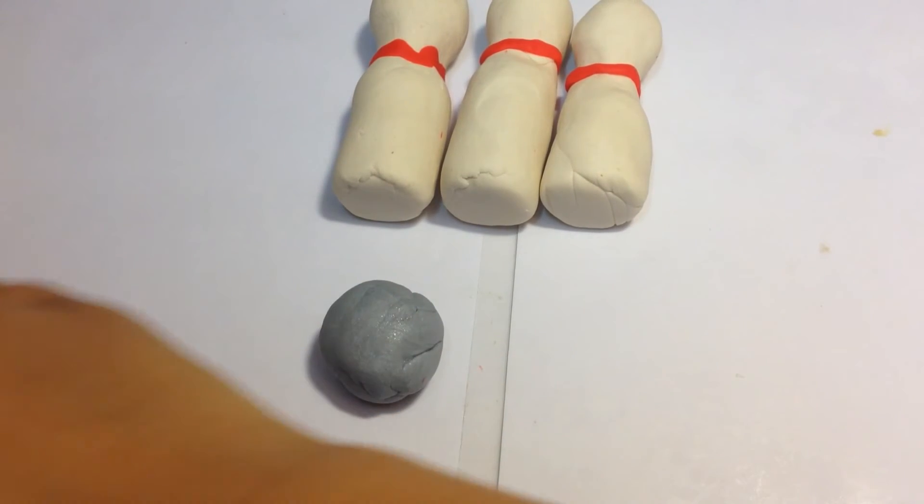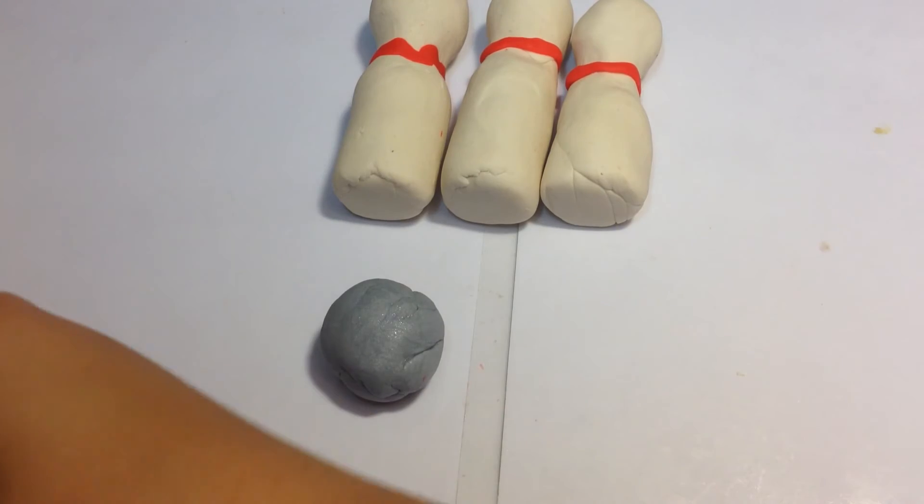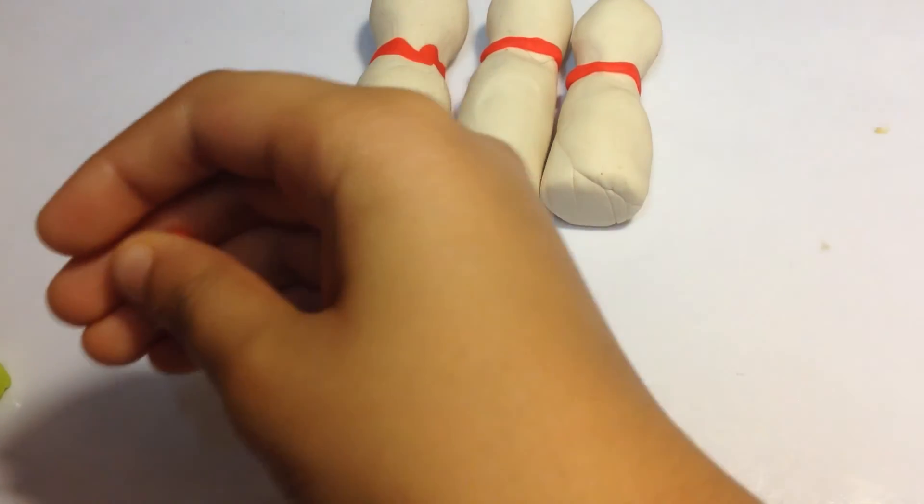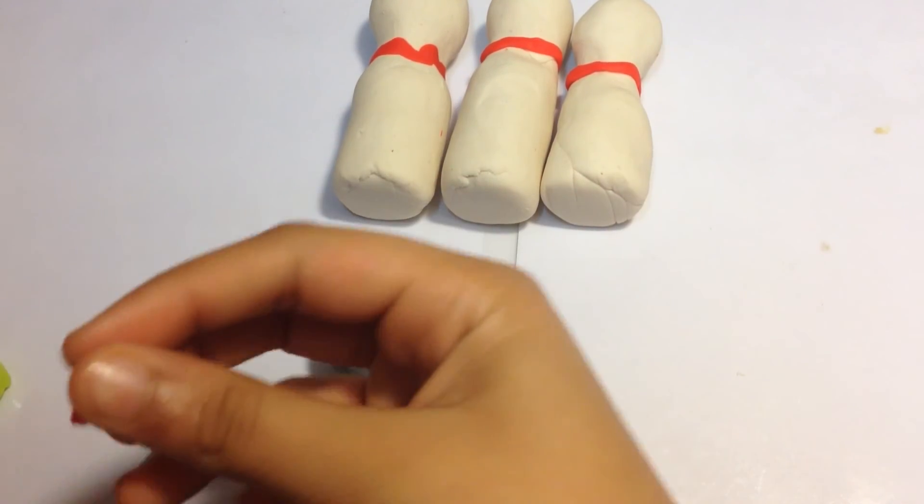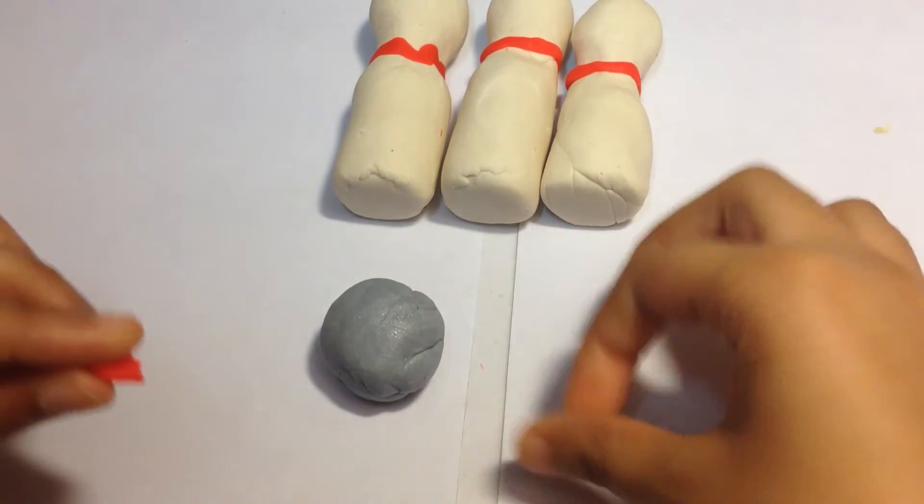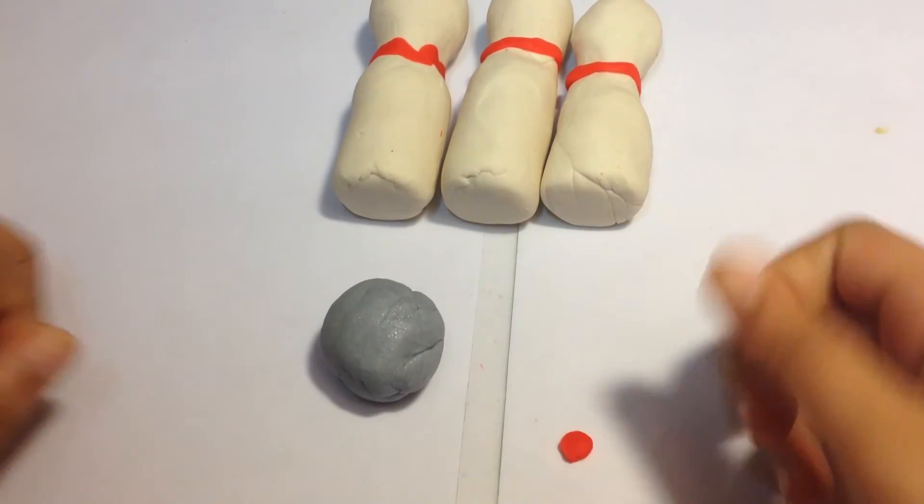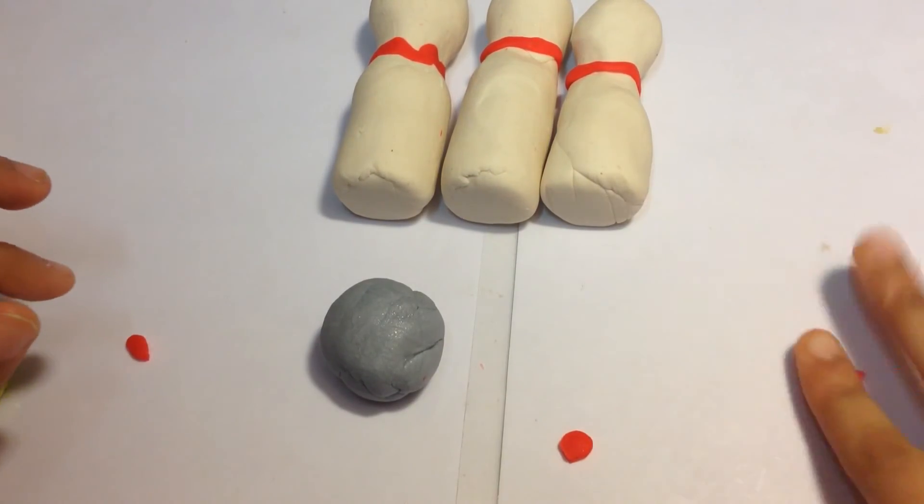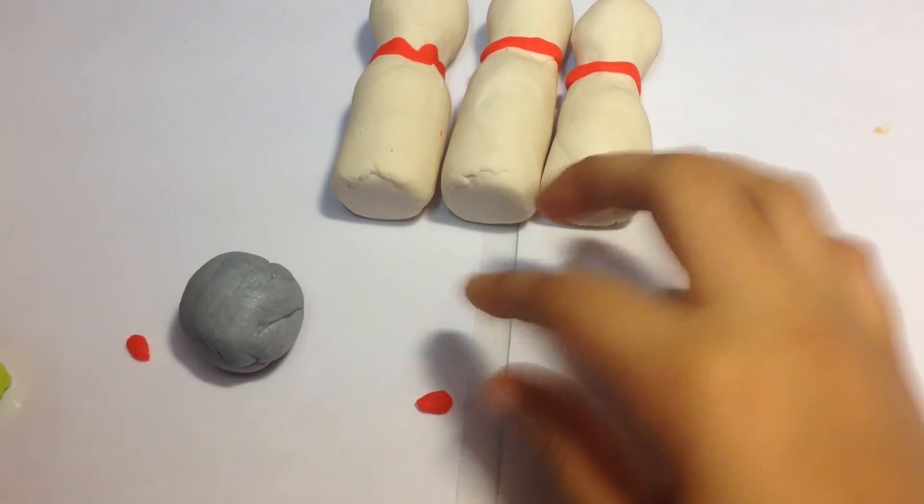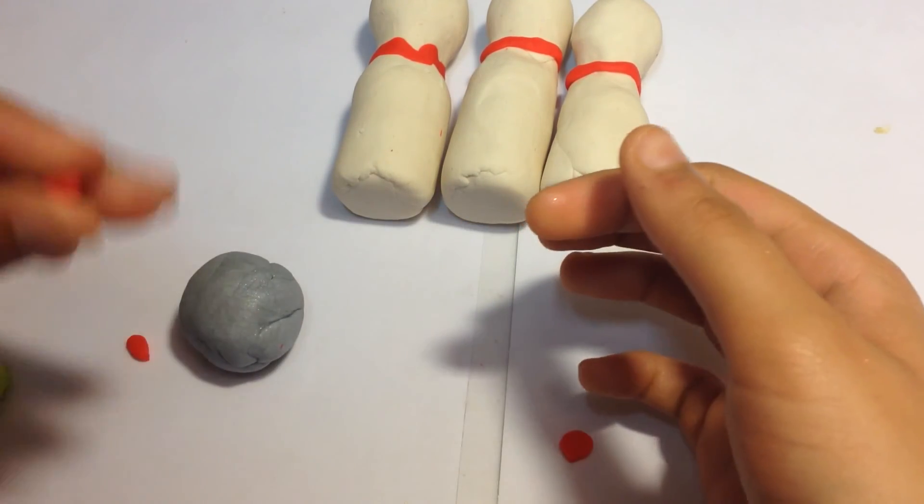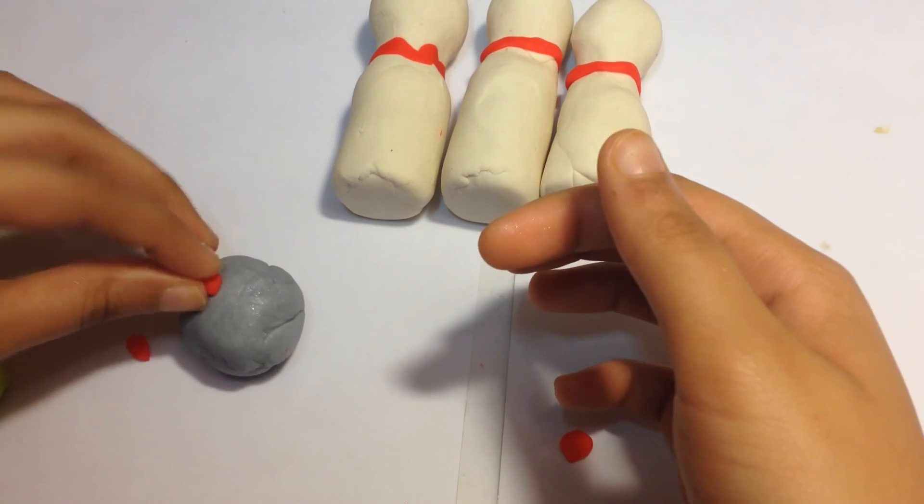And put three little dots on the bowling ball. So I'm going to separate this into three equal parts. Just roll this. Put that one there.